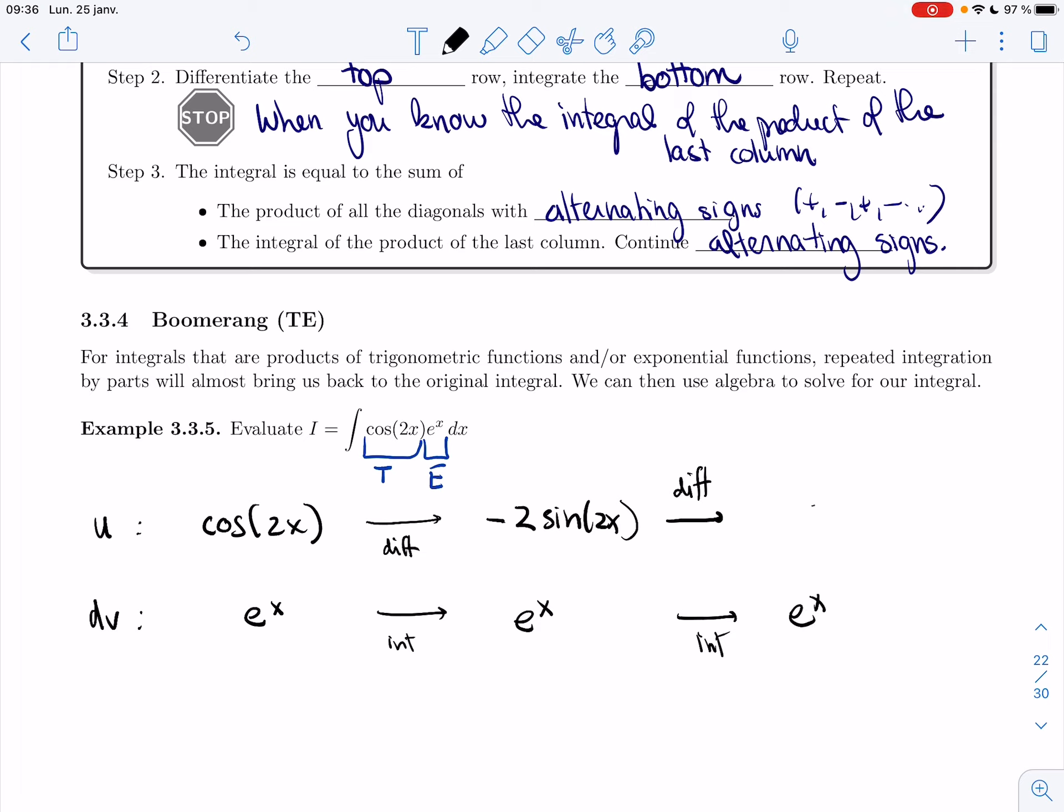Derivative of sine is cosine. And then I have a two that comes out from the chain rule, so I get minus four.